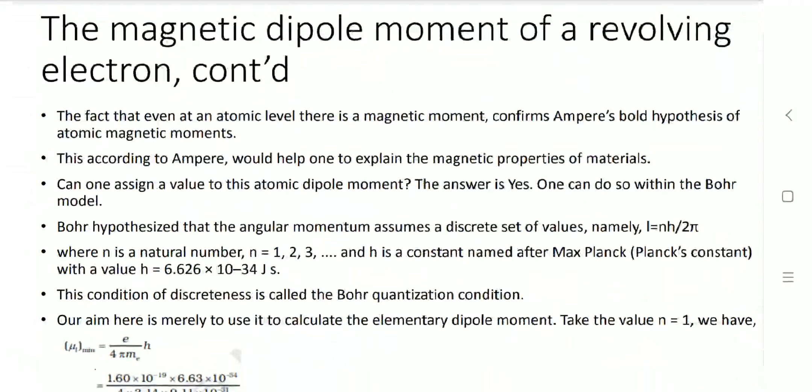At the atomic level, there is a magnetic momentum, which confirms Ampere's bold hypothesis of atomic magnetic moments. According to Ampere, this can help explain the magnetic properties of materials. Can one assign a value to this atomic dipole moment? Yes — using the Bohr model. Bohr hypothesized that angular momentum assumes a discrete set of values: L equals n h upon 2 pi, where n is a natural number. H is the Planck constant: 6.626 times 10 to the minus 34 Joule-seconds. This condition for discreteness is called the Bohr quantization condition.